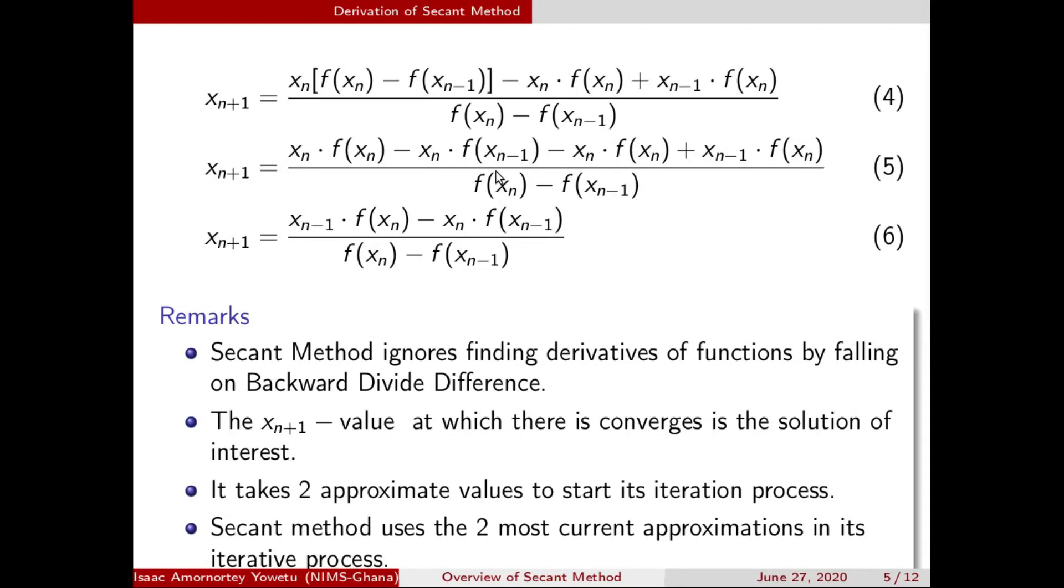I want to make some remarks about this Secant method. This Secant method ignores finding the derivative of functions by using backward divided difference. The x value at which there is convergence is our approximate solution. It takes two approximate values to start the iterative process. And this method uses the two most current approximations in each iterative process.